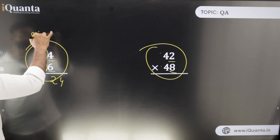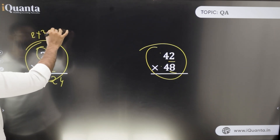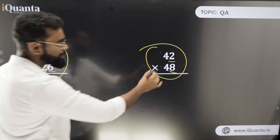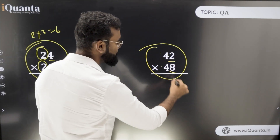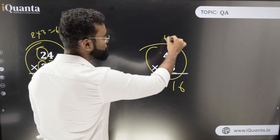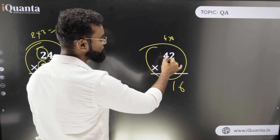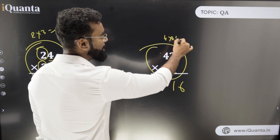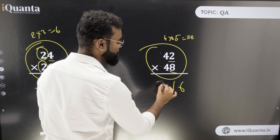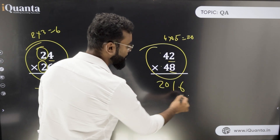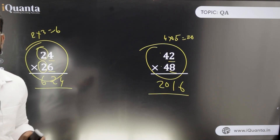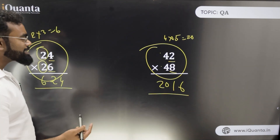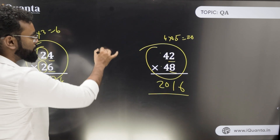For 24 × 26: units product is 4 × 6 = 24, leading part is 2 × 3 = 6, giving 624. For 22 × 28: units product is 2 × 8 = 16, leading part is 2 × 3 = 6... wait — 4 × 5 = 20, giving 2016. That is how this type of multiplication works.